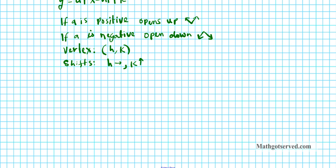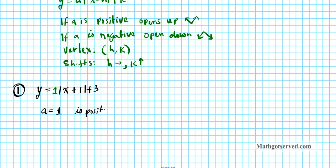Question number one: graph the absolute value function given by y equals the absolute value of x plus one, plus three. What is the value of a here? There isn't any number in front of the absolute value quantity, so we put in a one. Since a is one, which is positive, the absolute value function is going to open upwards — just like a quadratic, if it's positive it opens up.